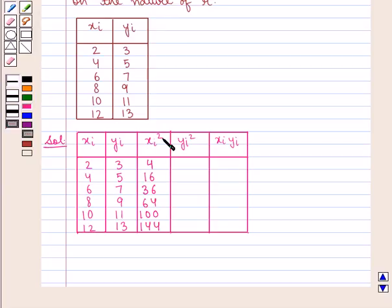Now xi square is given by 2 square i.e. 4, 4 square 16, 6 square 36, 8 square 64, 10 square 100 and 12 square 144.